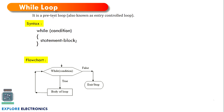While loop is a pre-test loop. That means we have a condition which will be checked in order to enter this loop. That's why it is also called as entry control loop — the entry to this loop will be controlled with a condition. This is the syntax to write the while loop: we have the while keyword and inside the brackets we will be writing the condition. Once this condition is satisfied, we will enter the loop and the statement block will be executed.